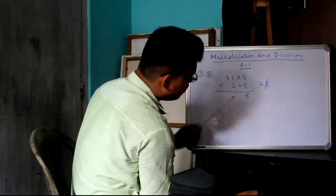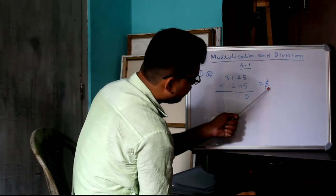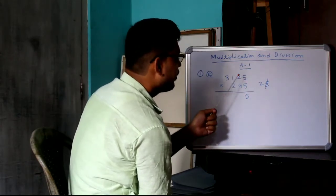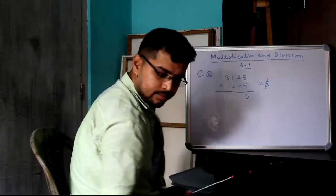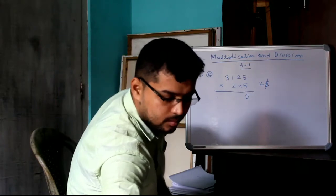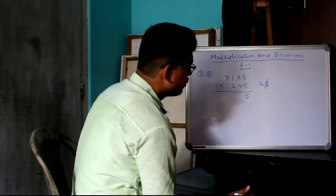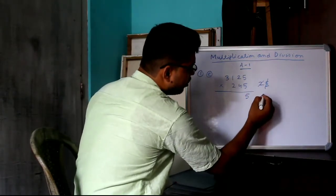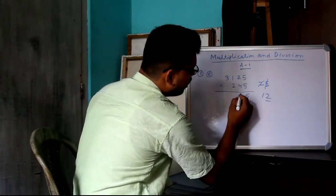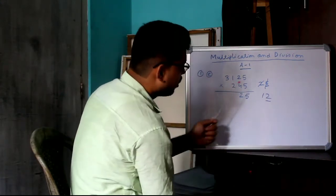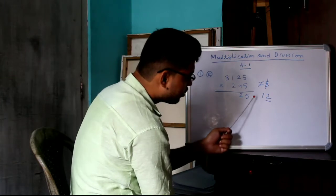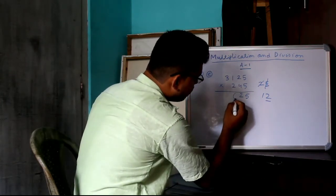Now, 5 x 2, see, 5 x 5, 25, 5 will come, 2 is gone. 5 x 2, 10. 10 plus 2, 12. 12, 2 will come, 1 is gone. 5 x 1, 5. 5 plus 1, 6.